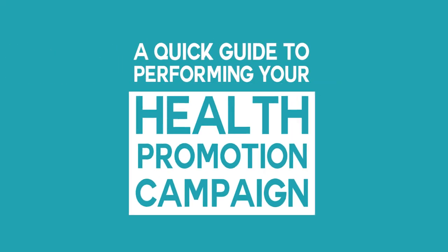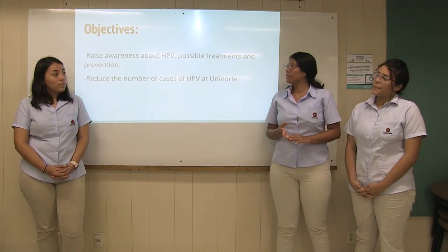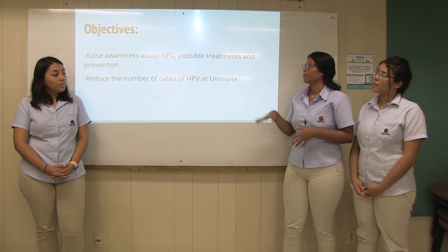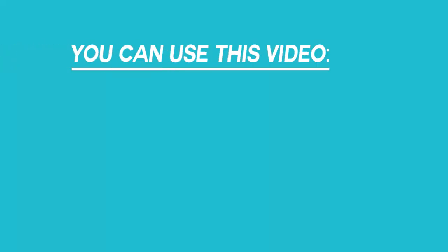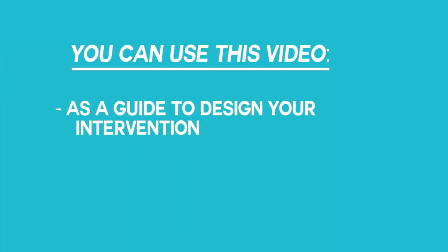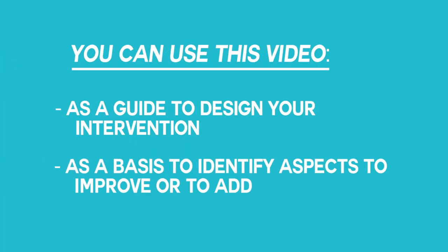The following video is a short sample of what your intervention should be. Therefore, the length has been shortened from the original. The team carrying out the intervention are former students of English for Health Sciences 5. They recorded the video with a real audience — Level 6 students from the General English Programme. The video is just a guide for you to design your intervention. You can use it as a basis to identify aspects you can improve or reinforce in your own campaign.